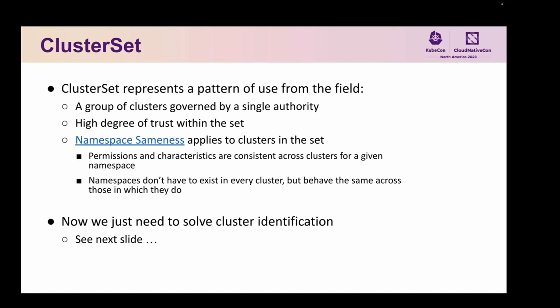If I can access namespace foo in cluster A and namespace foo is also in cluster B, I should be able to access both. Namespaces don't have to exist in every cluster — that's completely fine. But in the clusters in which they exist, they should behave the same. The ClusterSet and namespace sameness building block gives us one step closer to cluster fungibility — the idea that you don't have to care about the specific cluster you're working in. By relying on namespace sameness, you know that if you can access a namespace in the cluster, it's always going to be the same. That takes a huge operational load off.